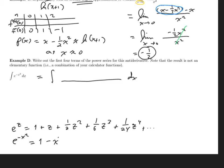So that'll give me 1 plus negative x squared, plus one half of negative x squared squared, plus one sixth of negative x squared cubed, plus one twenty-fourth negative x squared to the fourth, and so on.